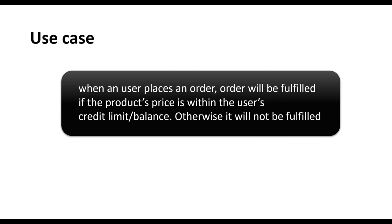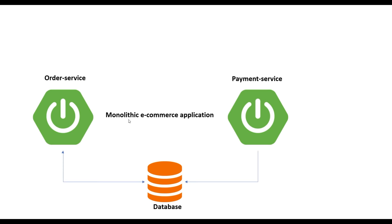This is the small use case we'll use to demonstrate the transaction feature in monolithic as well as microservice applications. When a user places an order, the order will be fulfilled if the product's price is within the user's credit limit, otherwise it will not be fulfilled. Let's map this use case with the monolithic approach first, then we'll see how difficult it could be in a distributed microservices system.